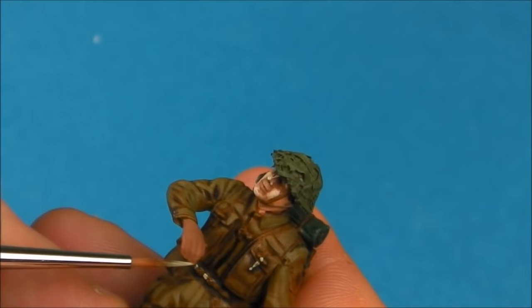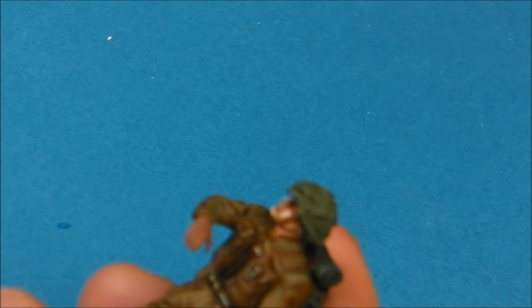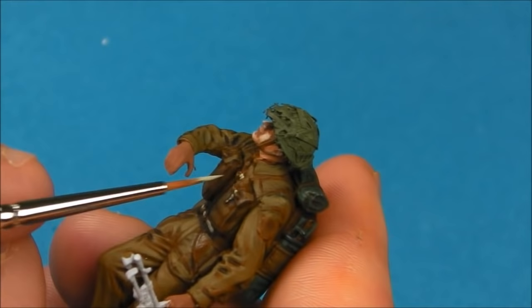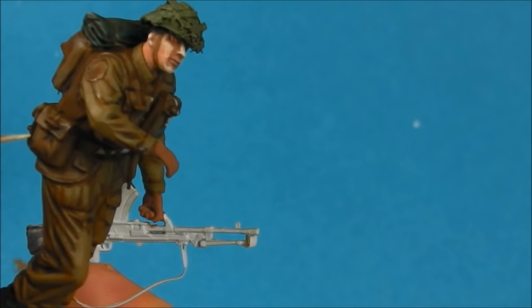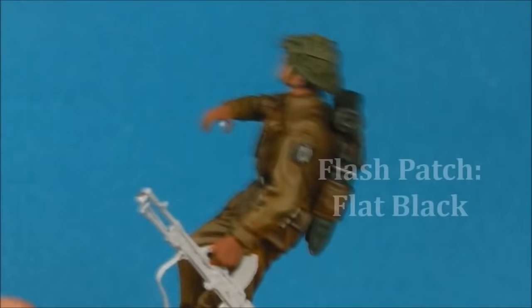Now I'm going to take some Vallejo Panzer Aces Dark Uniform. This is a lovely sandy color, and I'm going to start painting in the canvas tie downs and toggles on the assault jerkin. Again, I'm using a 0-0 rigger brush here. It has lovely long bristles on it. It allows me to get into these tighter details, and I've just thinned it down with a little bit of water. You can see the lighter color just allows the details to pop. It really does a good job framing and drawing the eye into the various details of the assault jerkin.